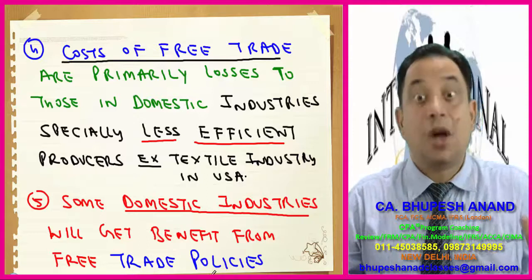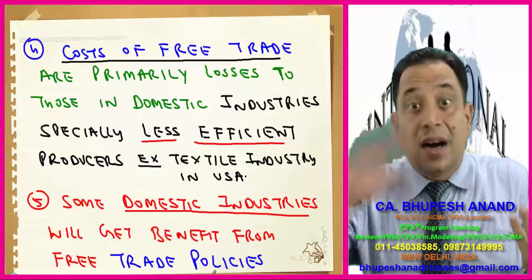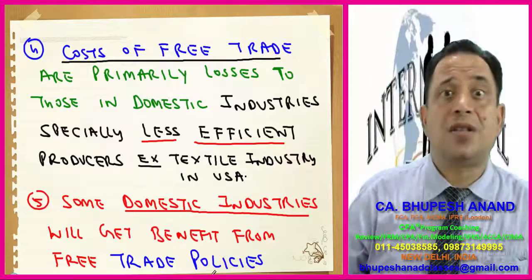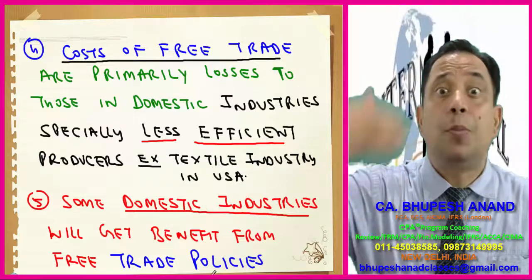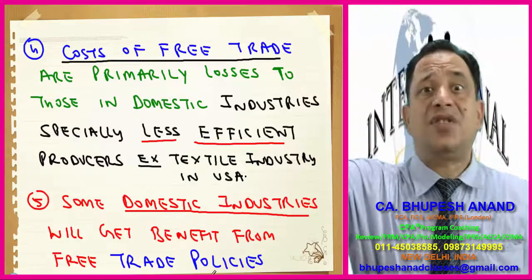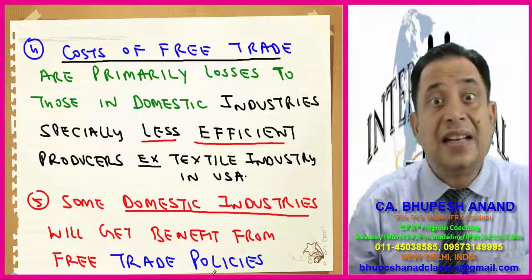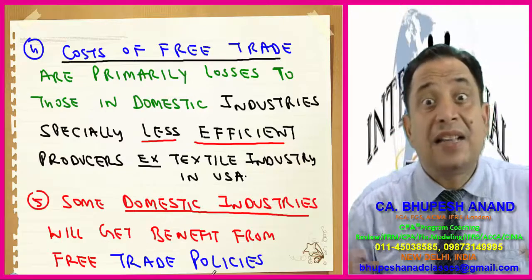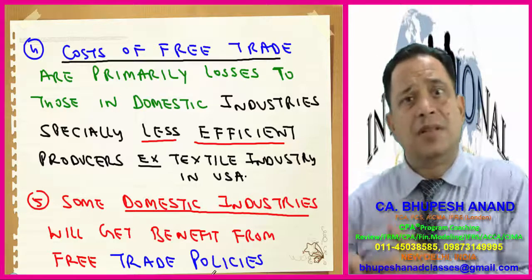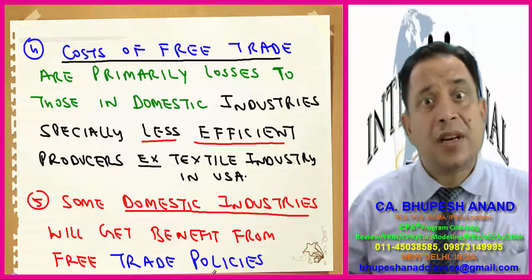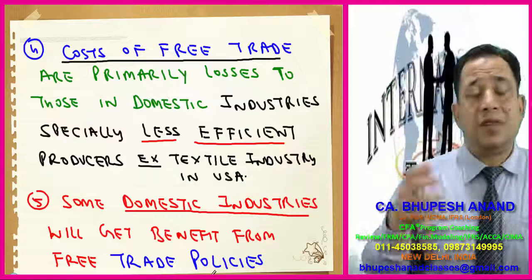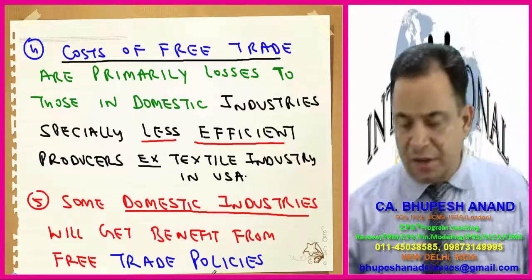For example, in the case of steel or automobile industries — earlier, automobile industries in India were purchasing steel from domestic manufacturers at a huge cost. But if steel is allowed to be imported from China or Australia, Indian domestic automobile industries can purchase that raw material at a lower cost, decrease their overall cost, and ultimately pass this benefit on to customers.